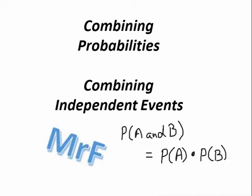Hey, forever trying to figure out another way to explain stuff. Combining probabilities. What if I want to look at some independent events and combine them? What's the probability of A happening and B happening, if they don't depend on each other? Let's have a look.